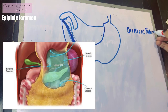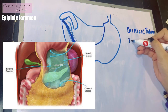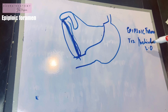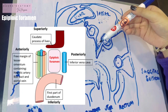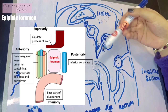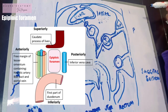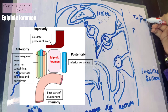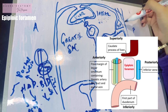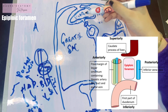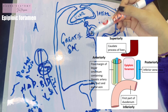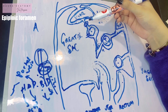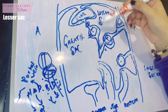The epiploic foramen, also known as the foramen of Winslow, is located at the T12 vertebra level, behind the free right margin of the lesser omentum. Its boundaries: anteriorly is the free right margin of the lesser omentum with its porta hepatis structures; posteriorly is the T12 vertebra and the inferior vena cava; superiorly is the caudate process of the liver; and inferiorly is the first part of the duodenum — because the rightmost part of the lesser omentum attaches to the duodenum.